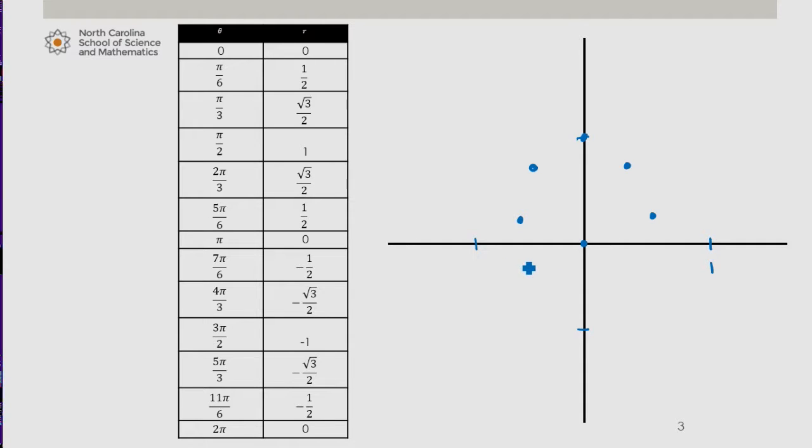But because the r value is negative 1 half, we actually plot it 180 degrees across. So 7 pi over 6, negative 1 half is plotted at this point.